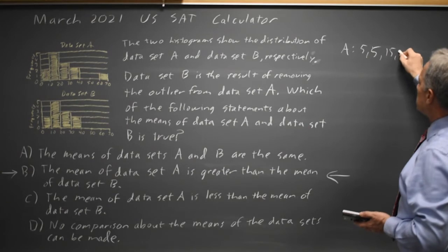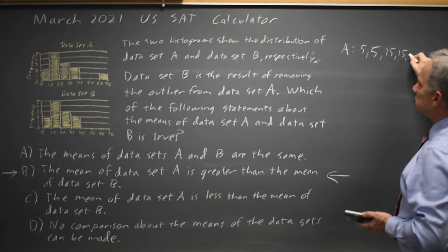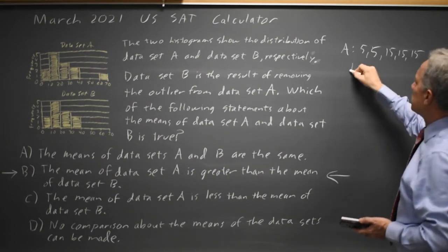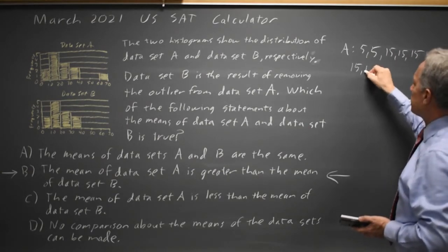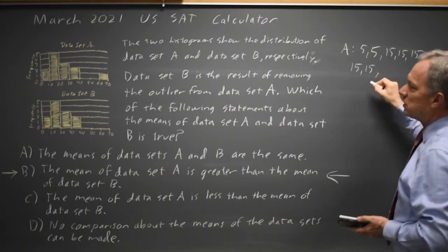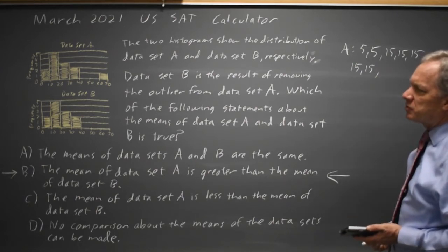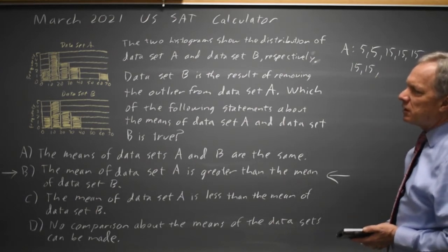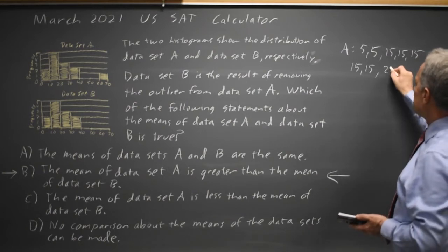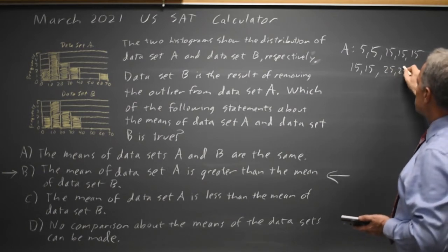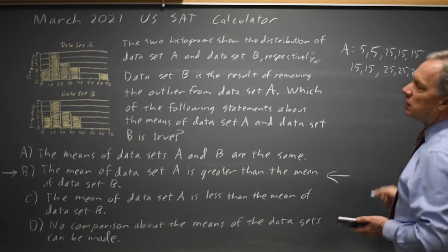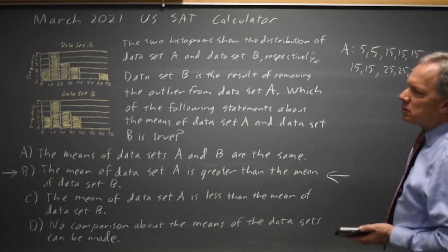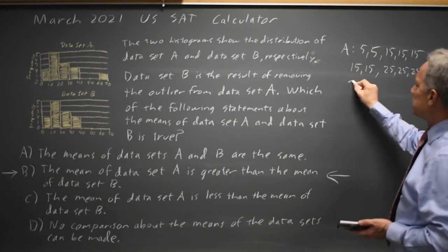Continuing data set A: 15, 15, 15, 15, 15, 15 — that's the five observations between 10 and 20. Then three 25s, and then two 35s.